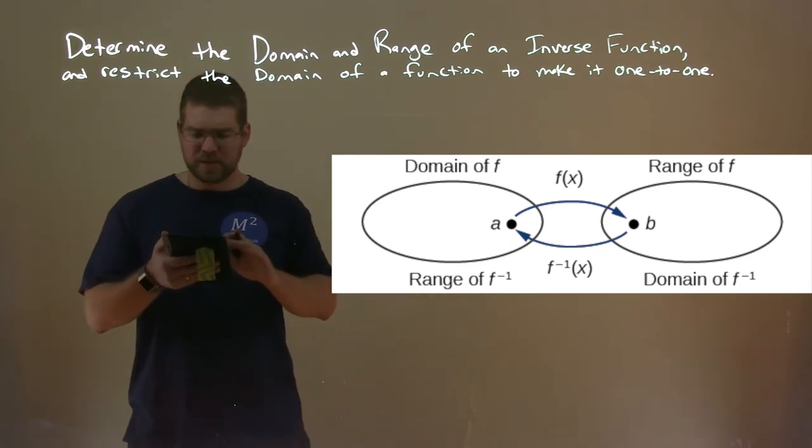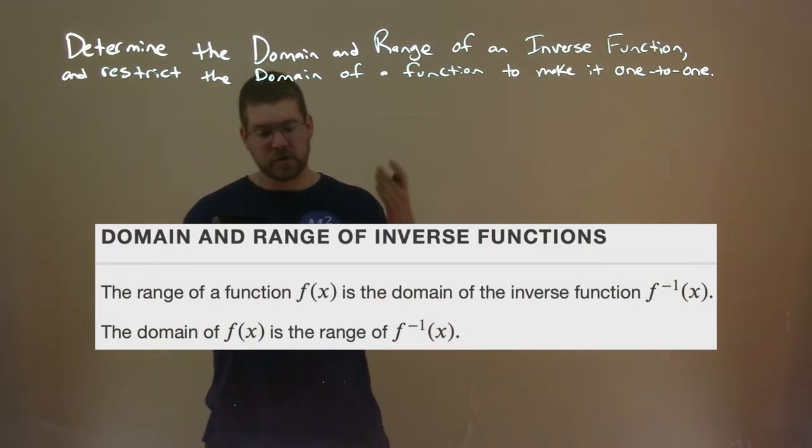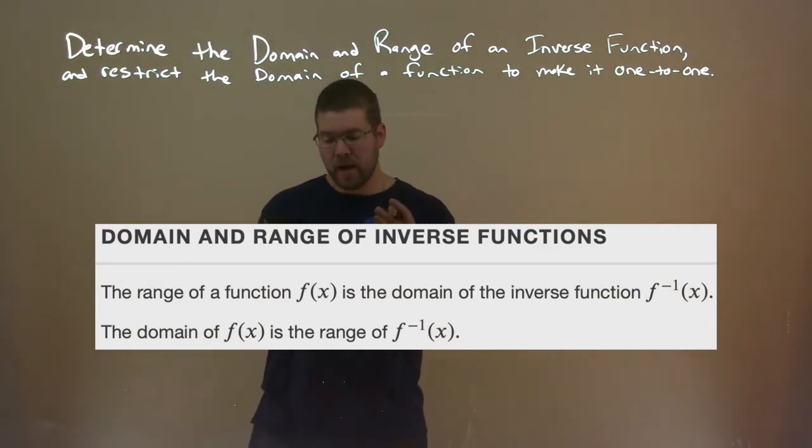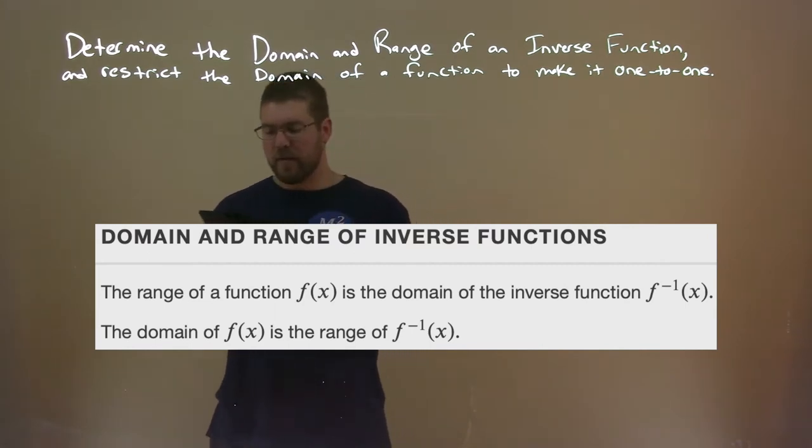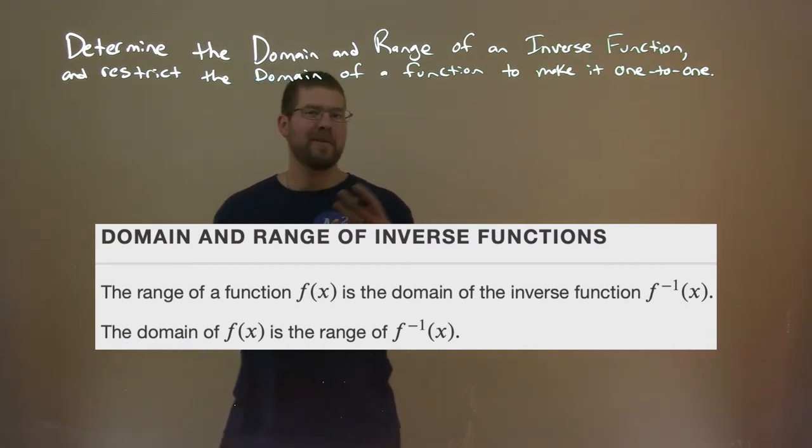Let's go with a quick definition here: domain and range of inverse functions. The range of a function f(x) is the domain of the inverse function f inverse of x. The domain of f(x) is the range of f inverse of x. And this is going to be tricky when we have to restrict domains for the inverse to make it work.